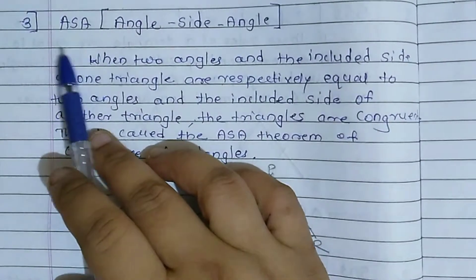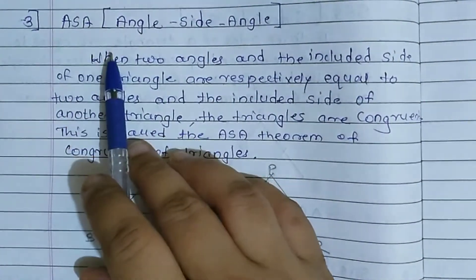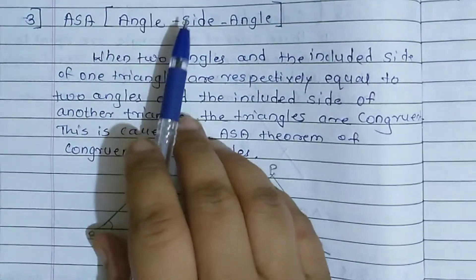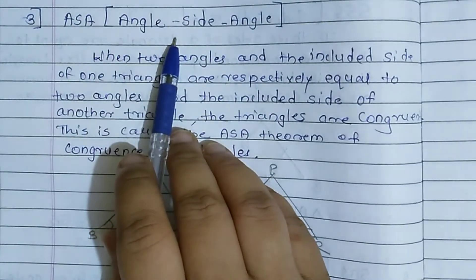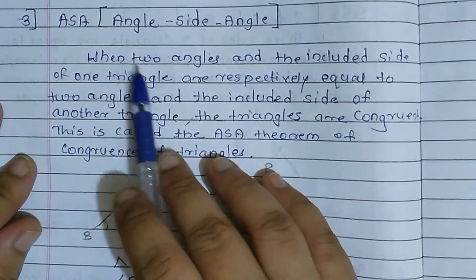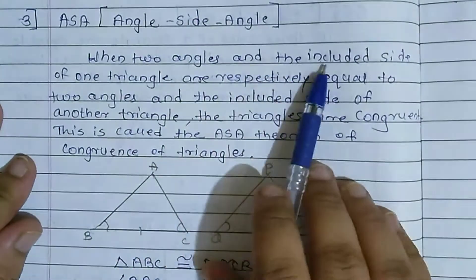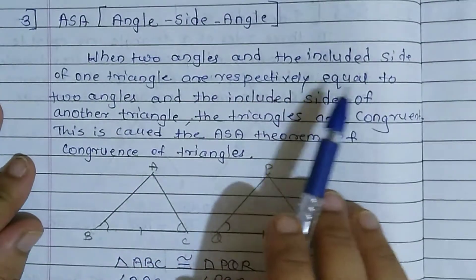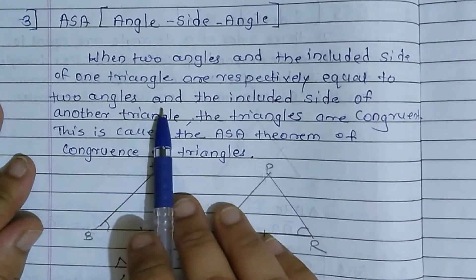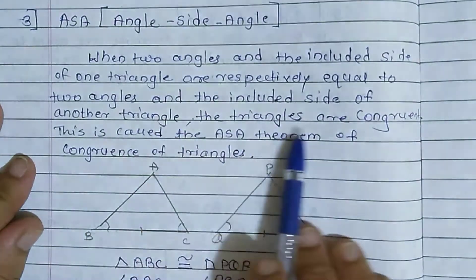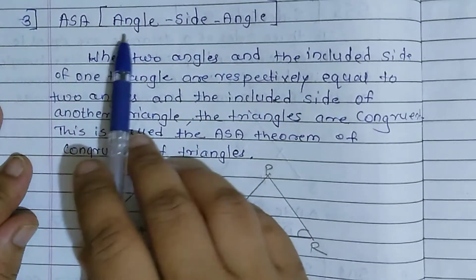Next, third is ASA — angle, side, angle. जैसे SAS में angle बीच में था, यहाँ पे side बीच में है। तो obviously, दो angles के बीच में ही side होनी चाहिए। When two angles and the included side of one triangle are respectively equal to two angles and the included side of another triangle, the triangles are congruent.